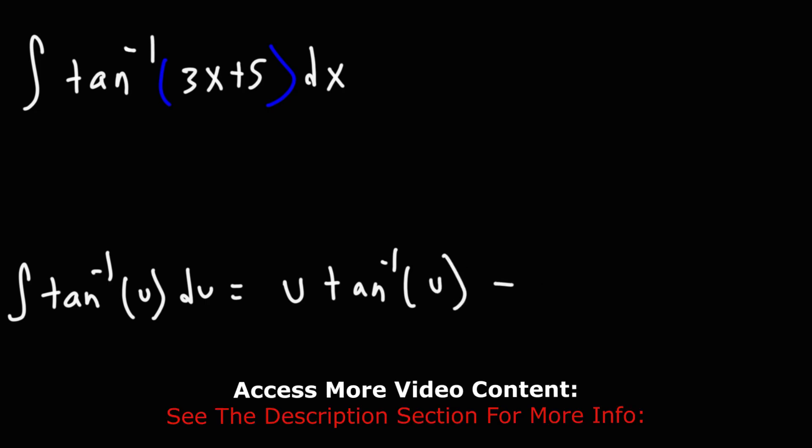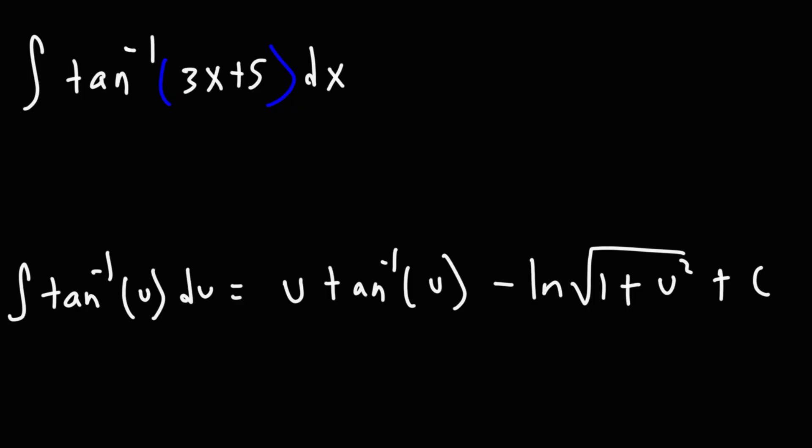And then it's going to be minus natural log square root 1 plus u squared. So there's some differences in the sign. In this case, we have a natural log function, instead of just a square root function.